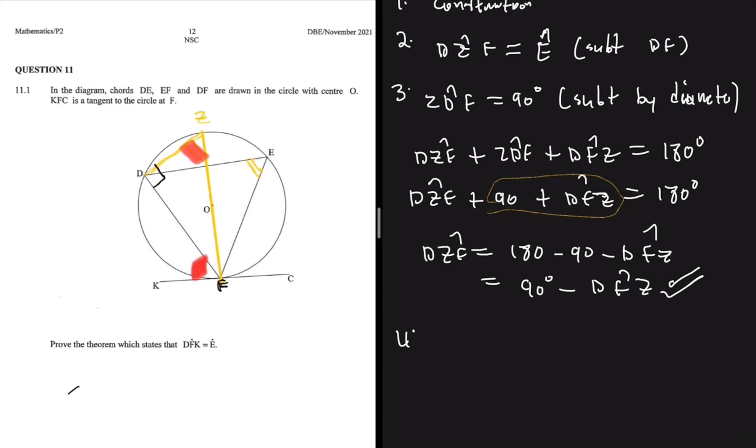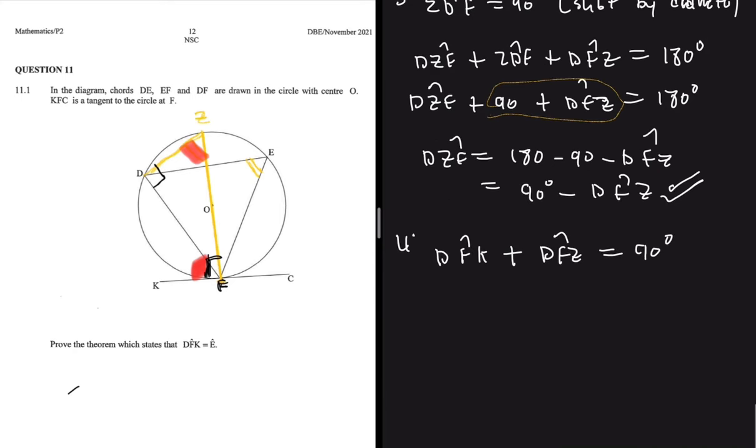If you look at our diagram, you will realize that this angle KFZ is 90 degrees—this entire angle. That is because where the radius and the tangent touch, they form 90°. So we're going to have DFK plus DFZ equals 90 degrees. If we make DFK the subject of the formula, we're going to get DFK equals 90 minus DFZ.